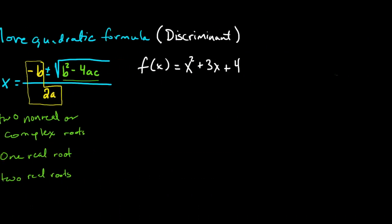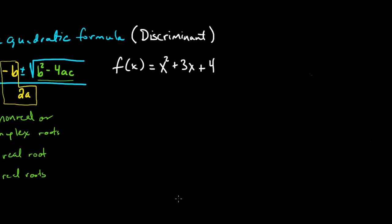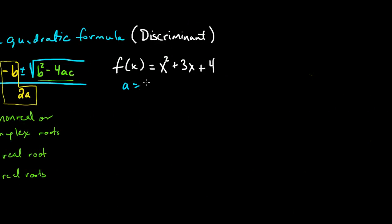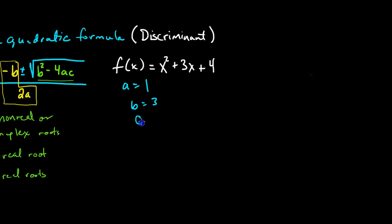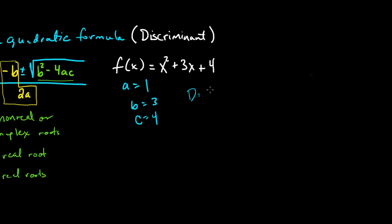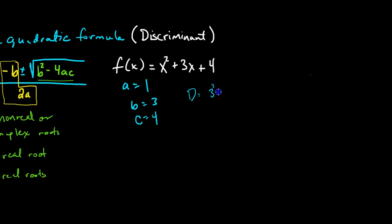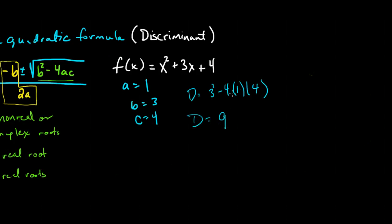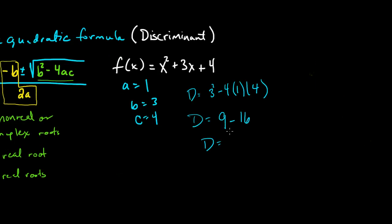Here we have f of x equals x squared plus 3x plus 4. So let's go ahead and find our a, which is 1, our b, which is 3, and c, which is 4. So in this case our discriminant is going to be b squared minus 4 times a times c. Our discriminant here is 9, and negative times a positive times a positive is a negative.